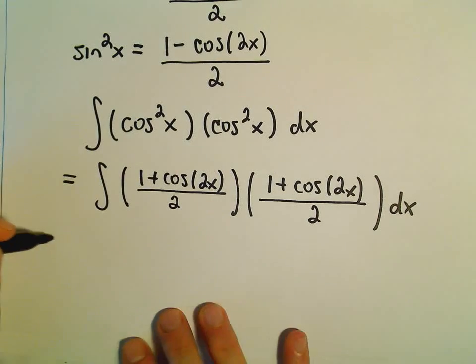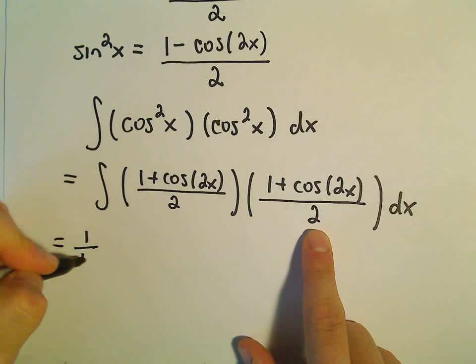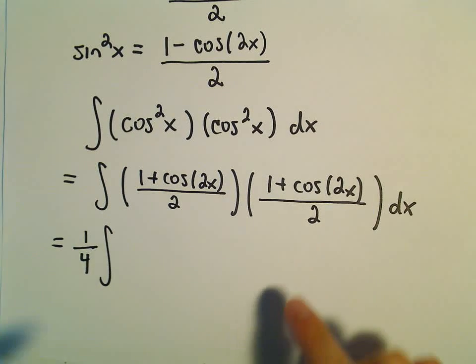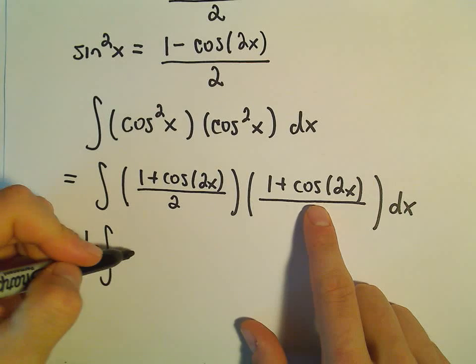Okay, so what I'm going to do is take the denominator. So 2 times 2 is 4. So we have 1 fourth. I'm going to pull that part just out front. And then we would have 1 plus cosine 2x times 1 plus cosine 2x. We would have to distribute.